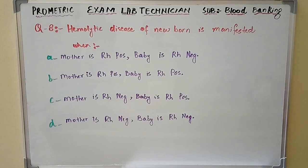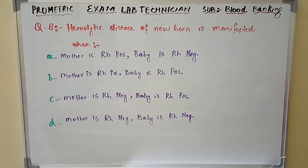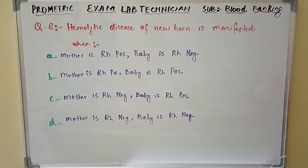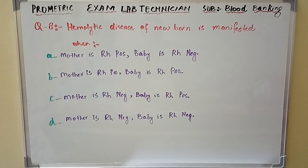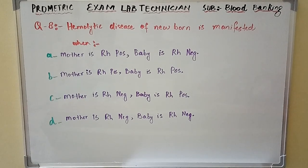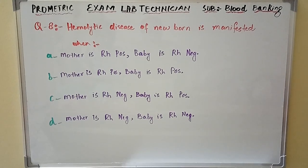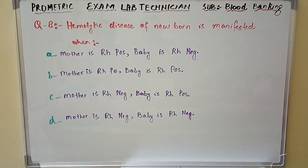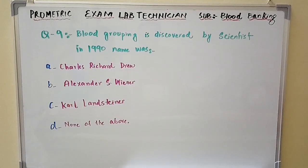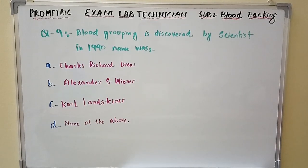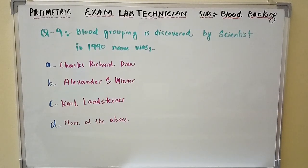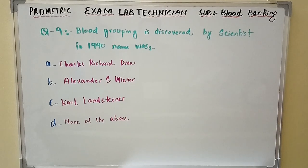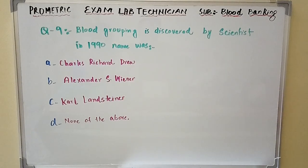Question number eight: Hemolytic disease of newborn is manifested when — Option A: mother is Rh positive, baby is Rh negative. Option B: mother is Rh positive, baby is Rh positive. Option C: mother is Rh negative, baby is Rh positive. Option D: mother is Rh negative, baby is Rh negative.